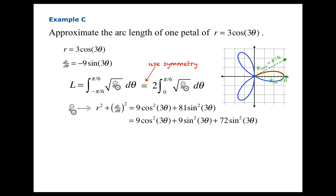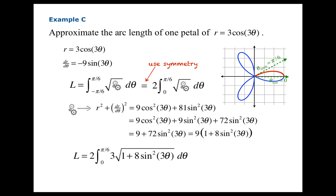Once you plug in the relevant information, you get that integrand. We can make it look a little simpler, and when we take the square root we get something that looks a bit nicer. This is not an integral we're going to do exactly — it's too much. Fortunately, we were asked to approximate the arc length, so use your favorite calculator or online utility. You get about 6.7 for the arc length. This is reasonable: moving from the origin out to the point (3,0) and back directly along the x-axis would be 6 units, and clearly you're going out of your way, so it's got to be greater than 6 — and it is.